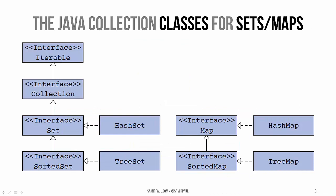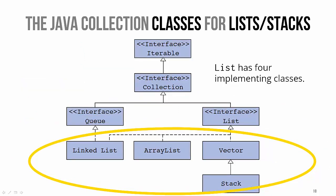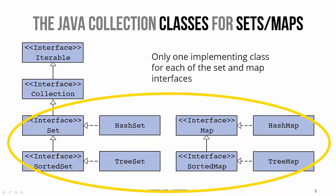There are a bit fewer options for sets and maps - there's only one class that implements each of those interfaces, in contrast to lists where there are four. Don't worry if you don't know what these data structures are - we will talk about them as the unit progresses. That's it for today. Next time we'll talk more specifically about lists as our first key data structure.